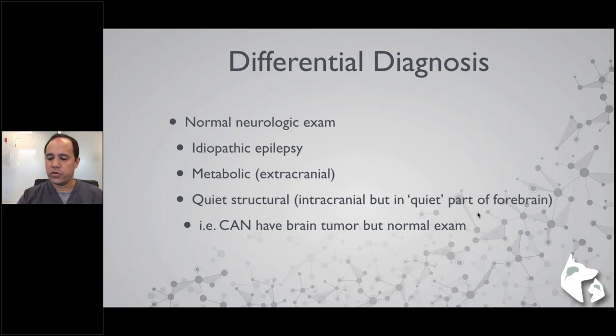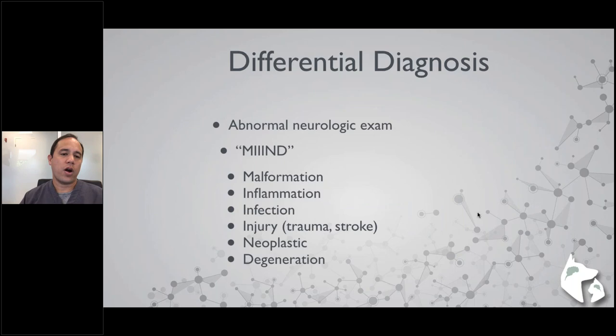For pets with an abnormal neurological examination, differentials include malformations, inflammation, infection, trauma, stroke, neoplasia, and degenerative conditions of the brain.